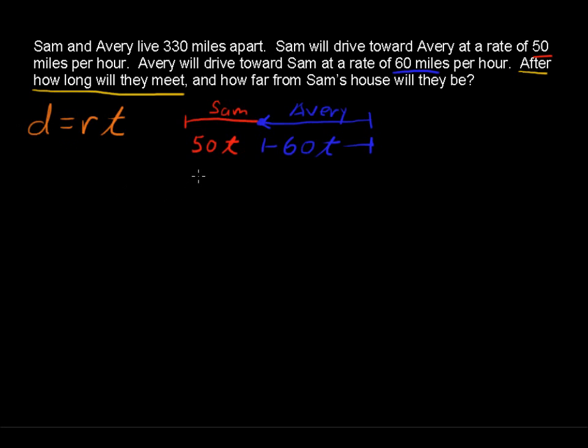And the total distance, we know that the total distance is 330 miles. So if we add this 50T, that is Sam's distance, plus Avery's distance, we should get a total of 330 miles. So let's do that. We'll say 50T plus 60T equals 330.